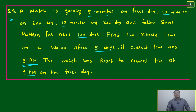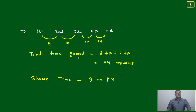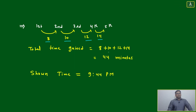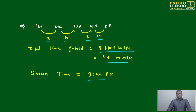From here we take the gain: 8, 10, 12, 14 minutes across the first, second, third, fourth, and fifth days. The total time gained is 44 minutes, so the watch shows 9:44 p.m.